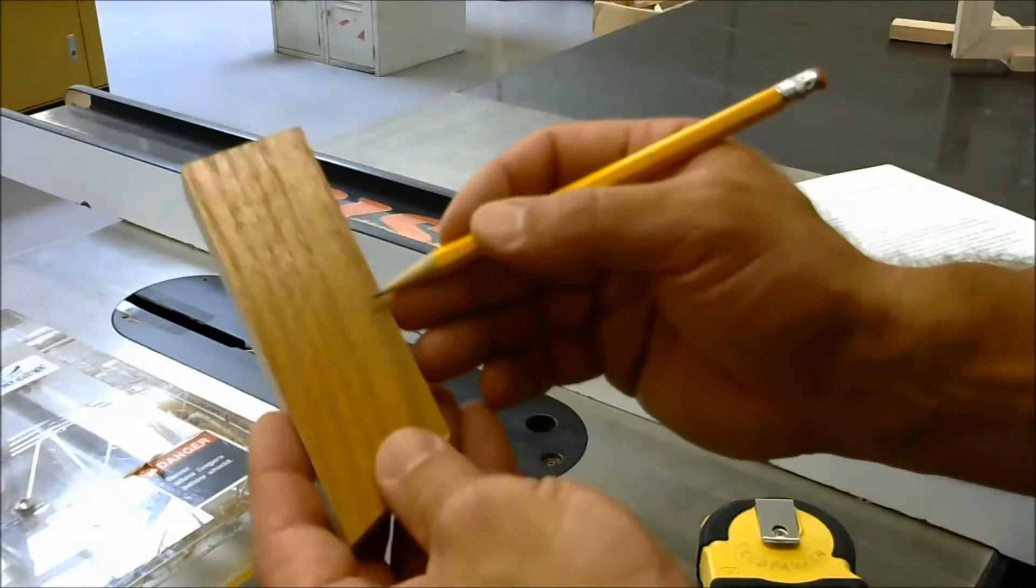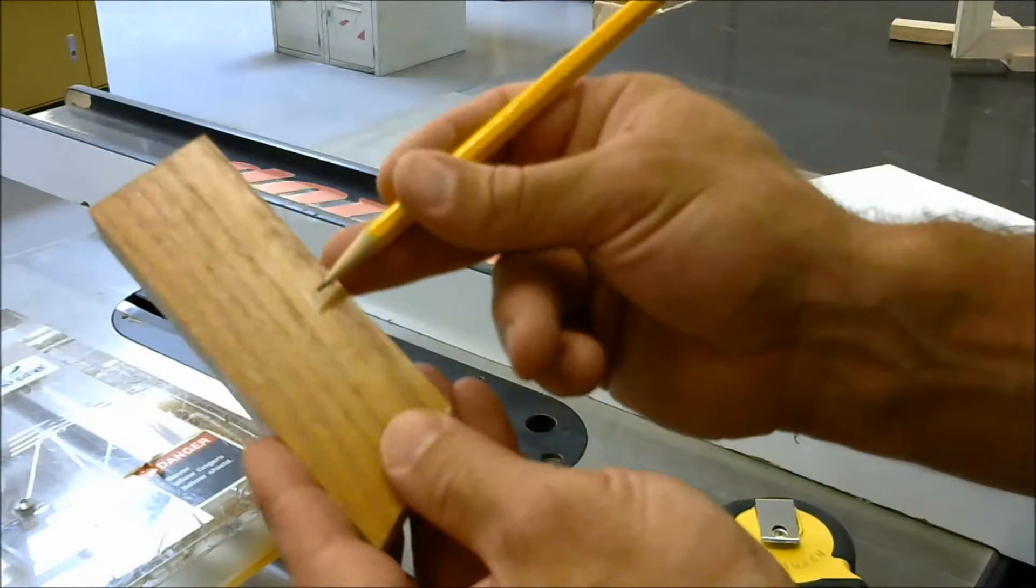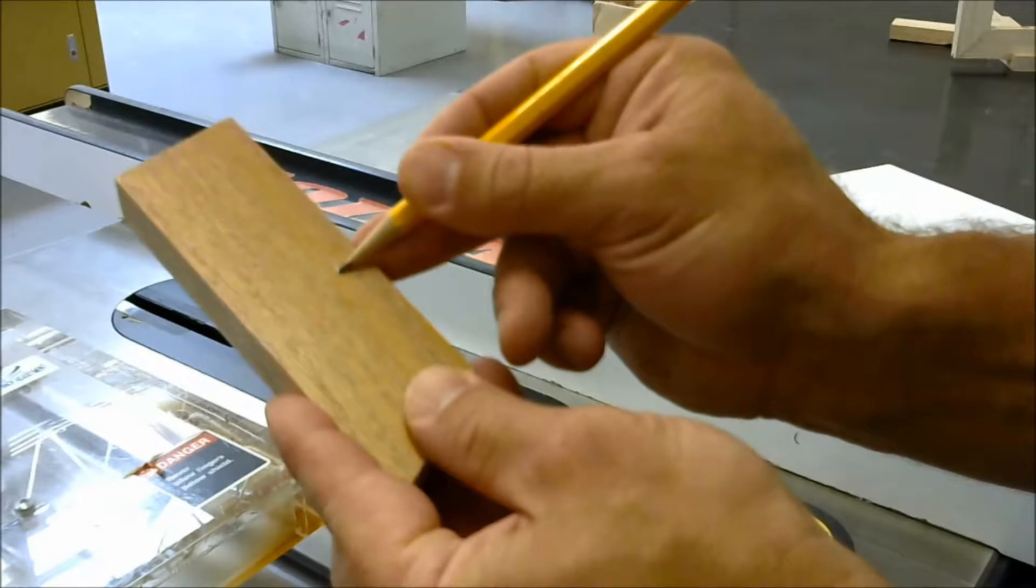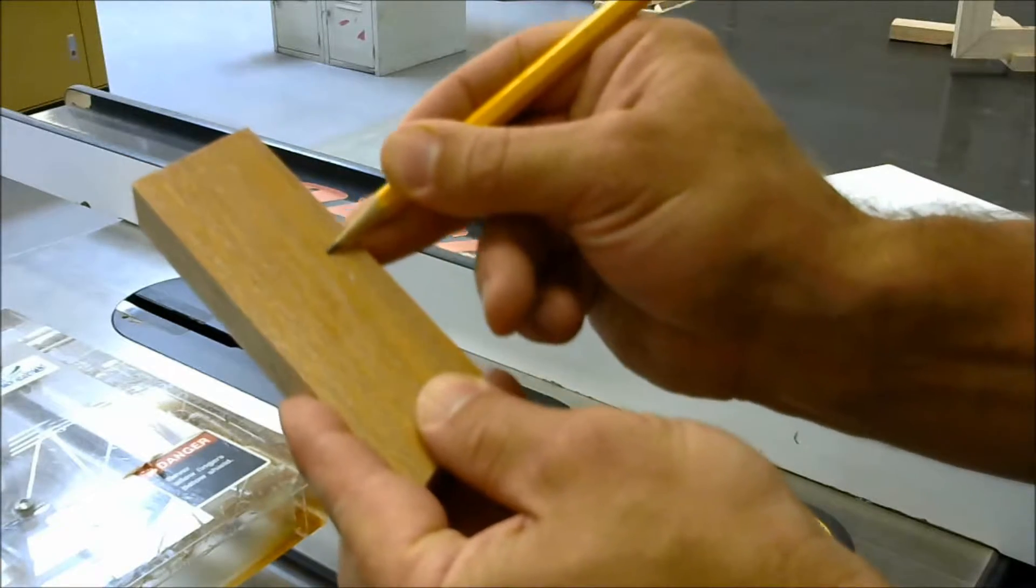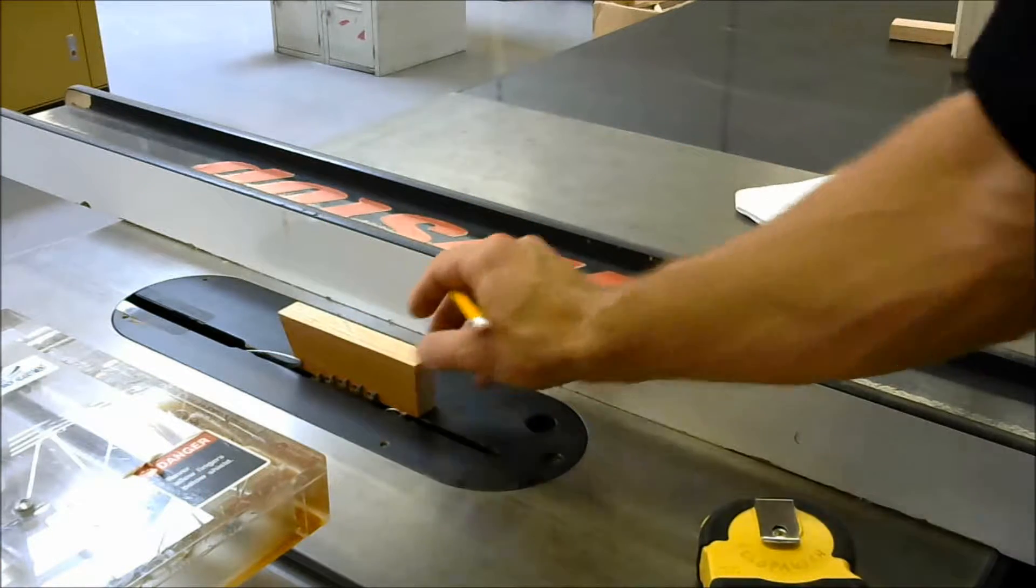Once we've made our three eighths of an inch mark, we can use a little pencil trick. Using our finger up against the edge, we can go to the line and then we can transfer that mark along the edge. That gives us a bigger target for setting our blade height.